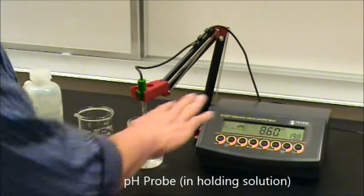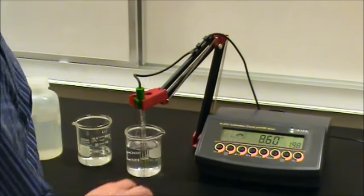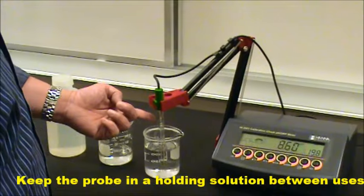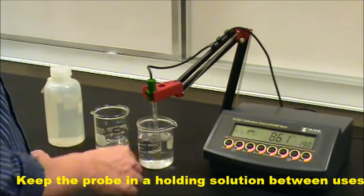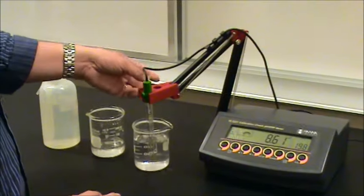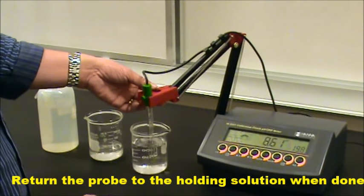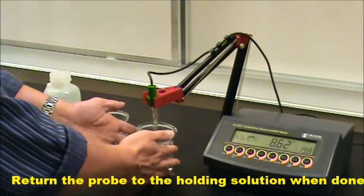First, when you come up to the pH meter station, the probe is going to be immersed in some kind of holding solution to keep the tip of the probe moist. When you're finished using the pH meter at any time, you want to make sure you immerse it back in the holding solution.